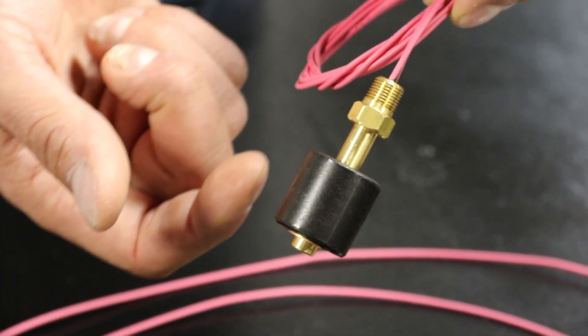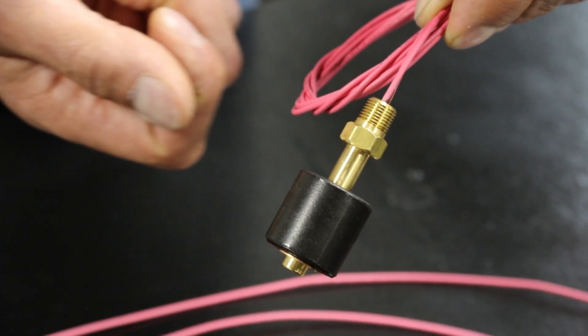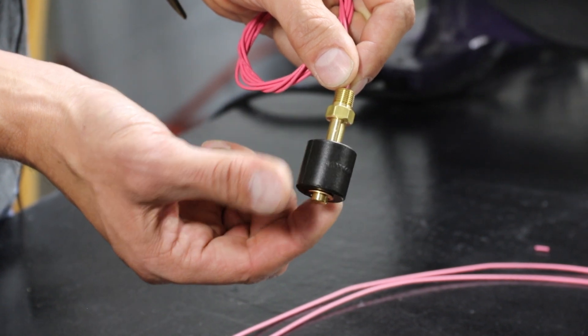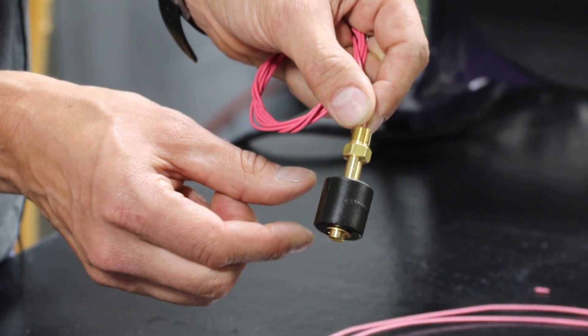This is a basic single level float switch. Today I'm going to show you how it works. The purpose of this switch is to open or close a circuit as the level of liquid rises or falls.